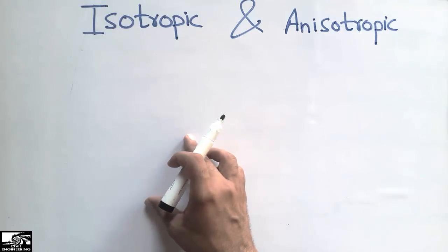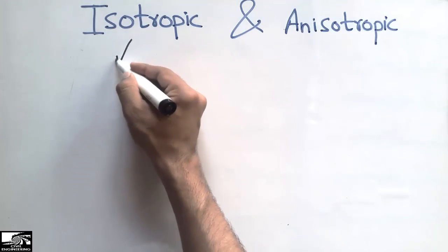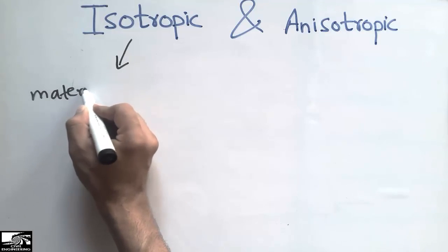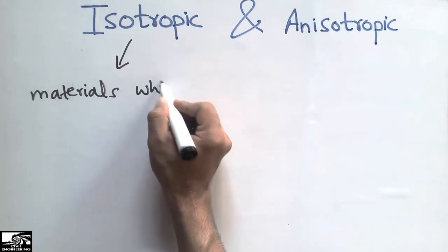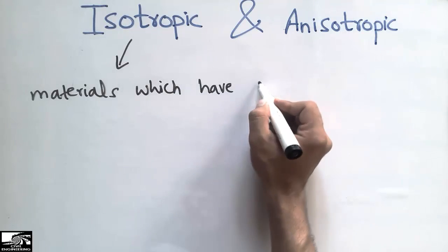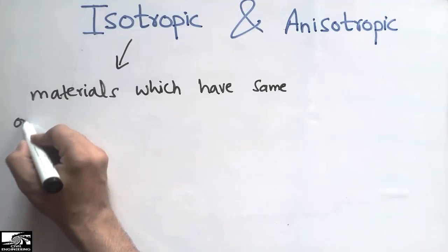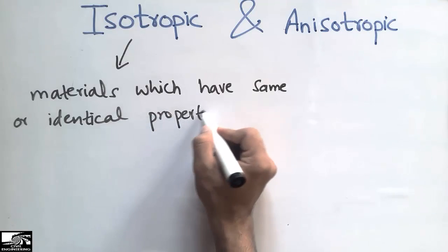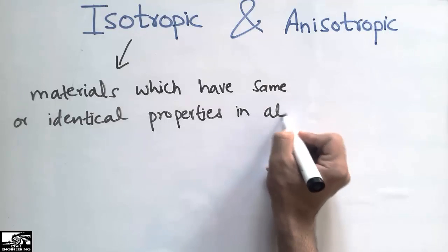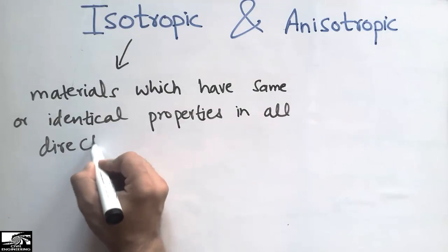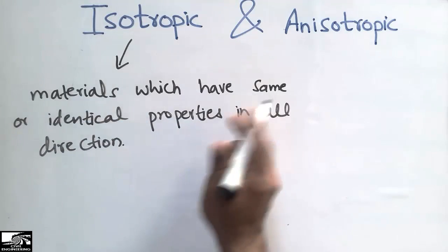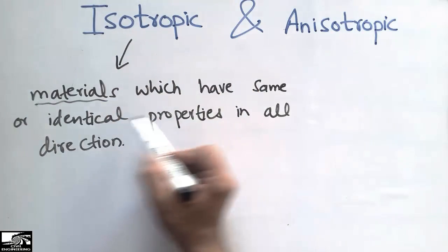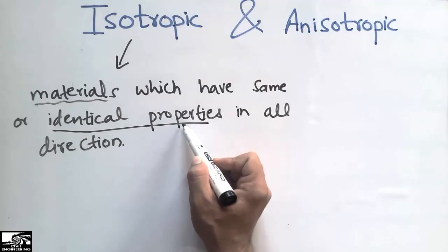The first one is the isotropic material. Isotropic materials are those materials which have the same or identical properties in all directions. These are materials which show equal or identical properties in all directions.